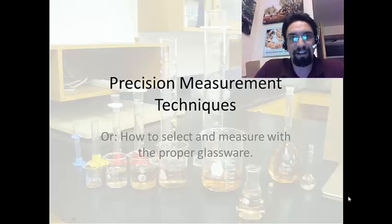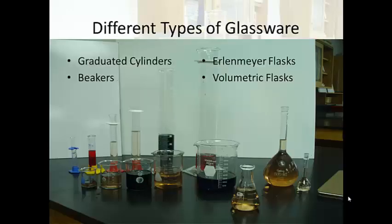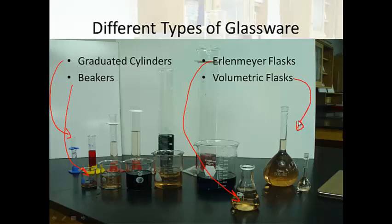Hi, Mr. Cain here. I'm going to be talking to you today about how to make precision measurement techniques, or in other words, how to select and measure with the proper glassware in Chemistry Lab. When you take a look in Chemistry Lab, you'll notice that we've got a bunch of different types of glassware to choose from. We've got graduated cylinders, we have beakers, we have Erlenmeyer flasks, and we also have volumetric flasks. It's important that you know how to pick out the right measurement device for the right job. So we're going to talk about that today.